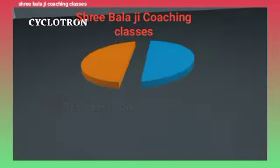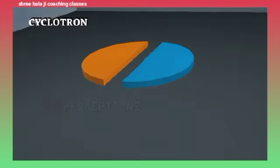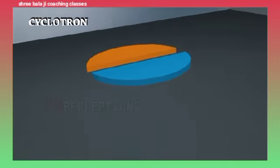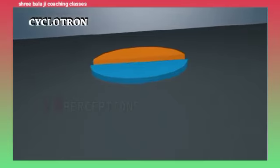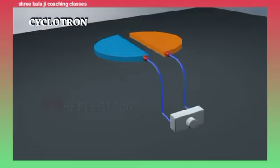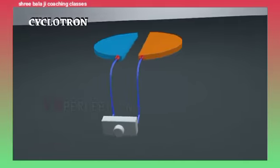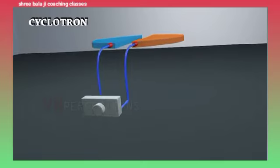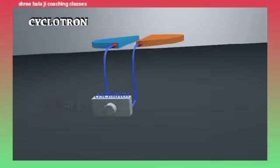Two hollow half cylinders made of high conductive metals known as D's are so placed that the straight edge will be face to face with a small gap between them. Now these two D's are connected to two terminals of an alternating voltage source, an oscillator.